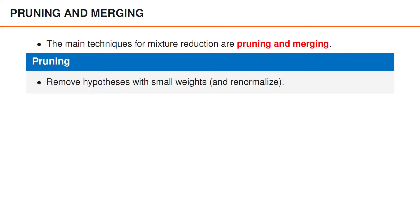In this context, pruning means that we remove unlikely hypotheses, that is, hypotheses with small weights, and we normalize the weights of the remaining hypotheses such that they sum to one.